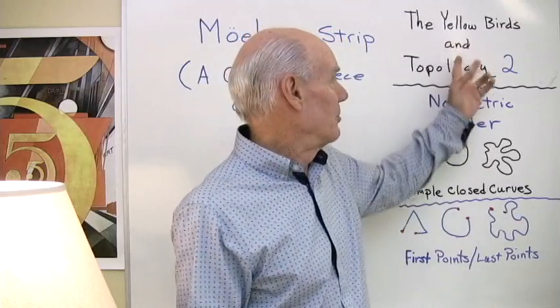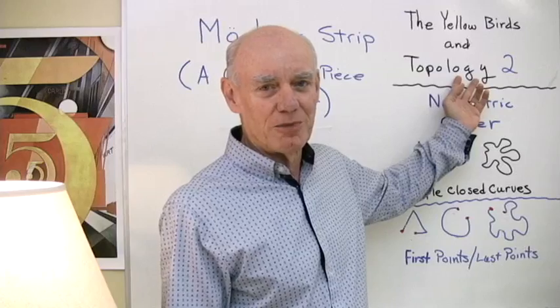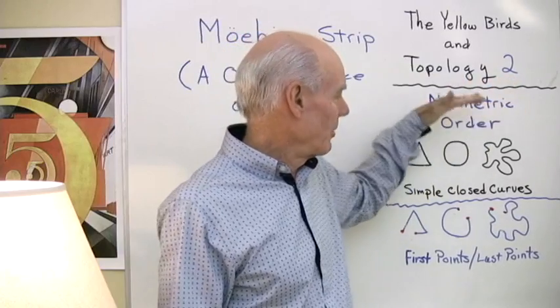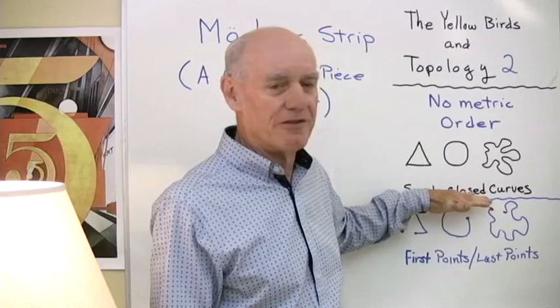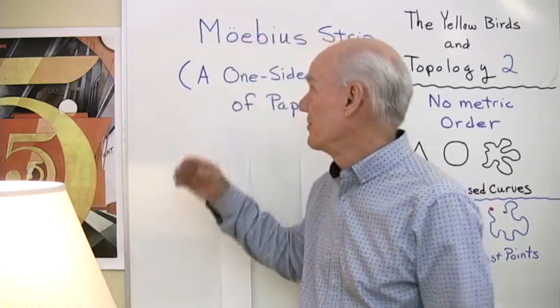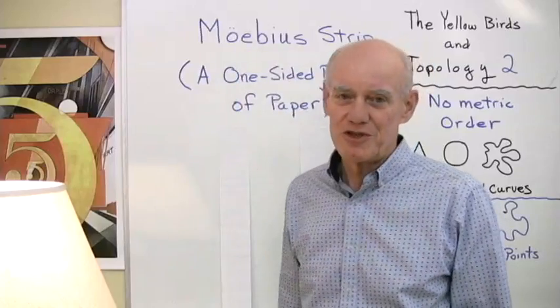All right, here's a little follow-up to the Yellowbirds in Topology. We'll call it the Yellowbirds in Topology II. And what I want to do is take this idea of the simple closed curves and just go up one level of sophistication to what's called the Mobius Strip.